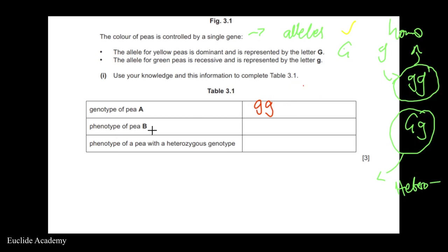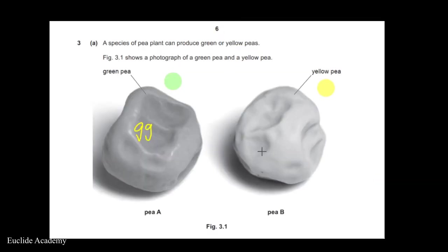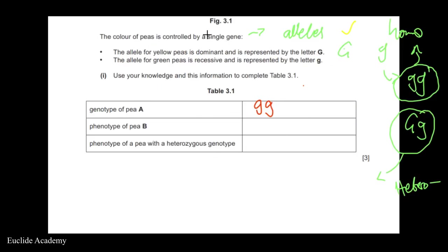For the phenotype of Pb: the phenotype refers to the physical characteristic of an organism. Since the question already tells us that Pb is yellow, the answer is simply yellow — that is the physical characteristic you can observe.